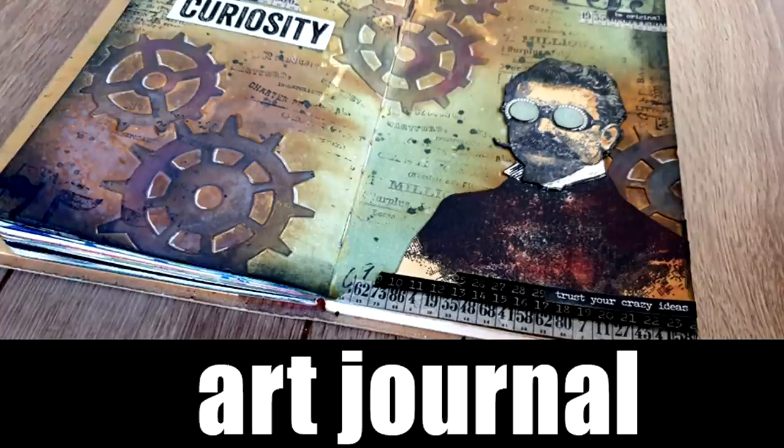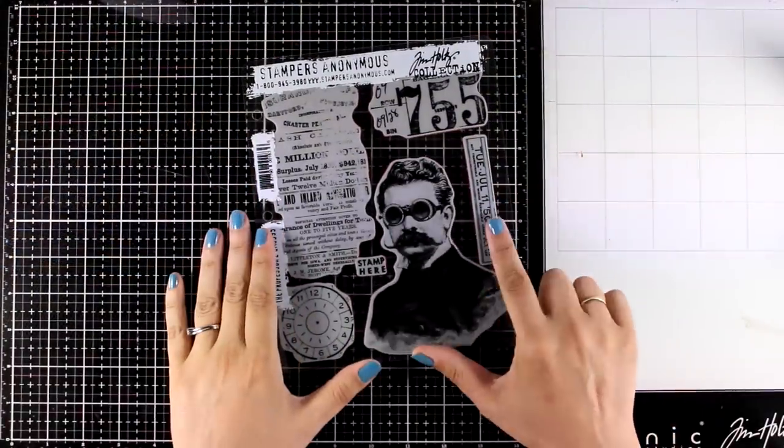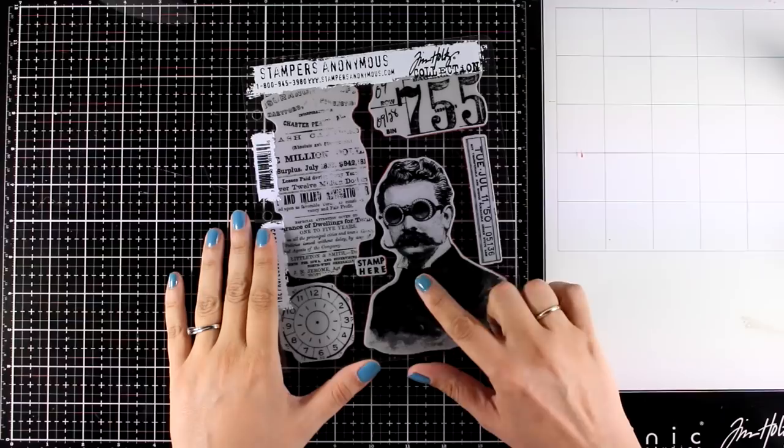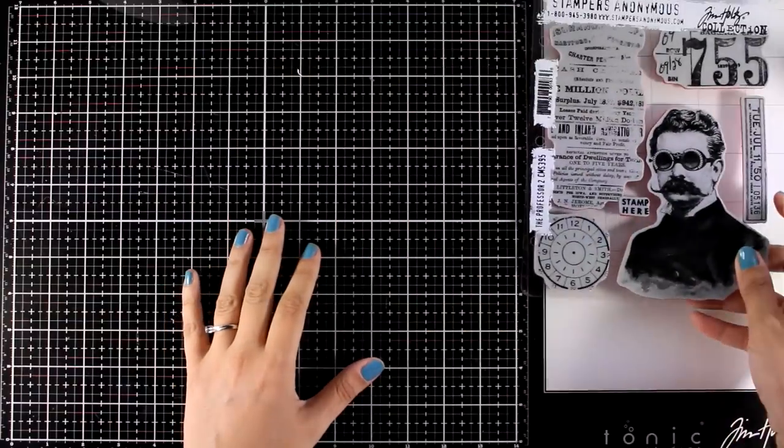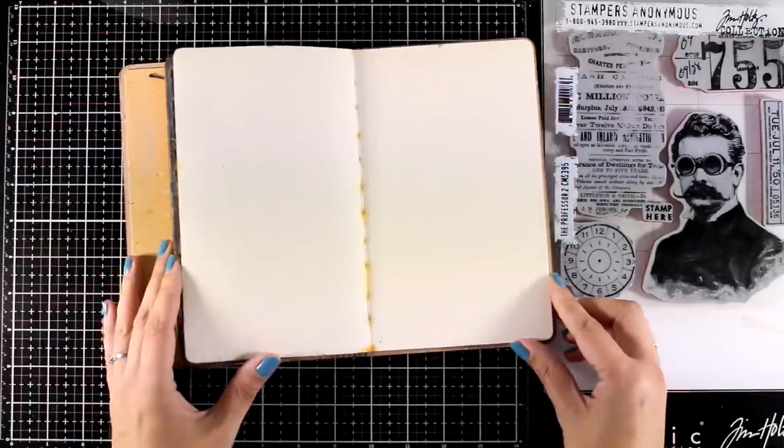Hi everyone, it's Vicky here and welcome back to a new art journal layout. My project today has a vintage look and feel and I will be working with a Professor's stamp set by Tim Holtz. This is very popular and I have been holding onto it, and finally today is the day where I am going to use it.